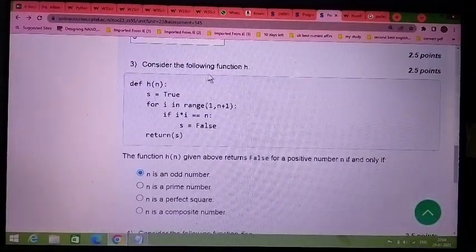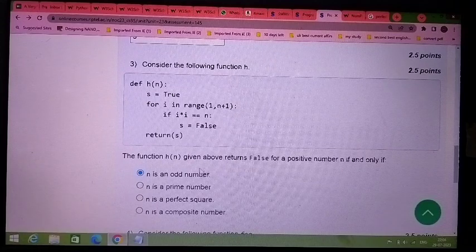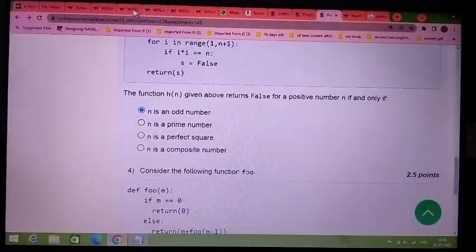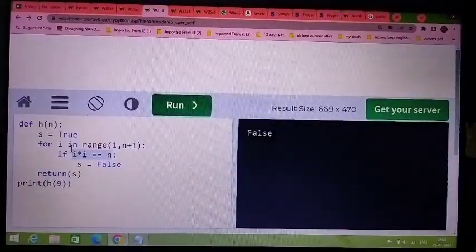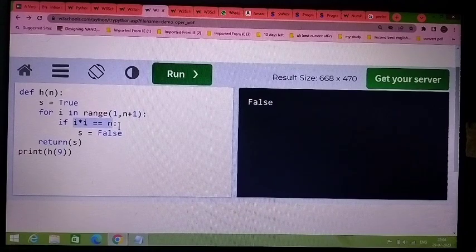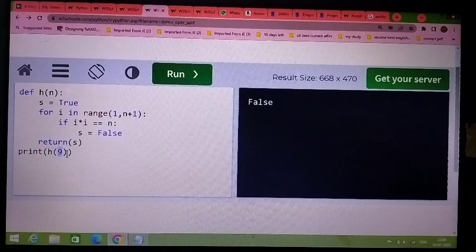Third question: consider the following function and you have to find the answer. In this problem, you can see i times i equals n. This case is possible if the value of i is equal to 9. There are other cases too.